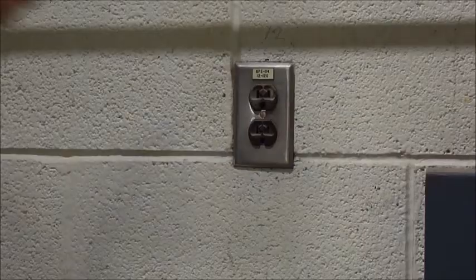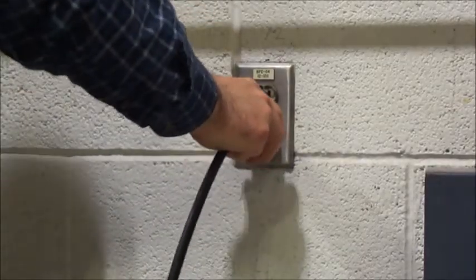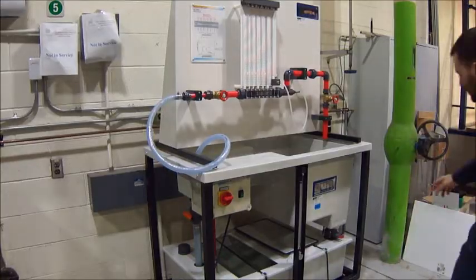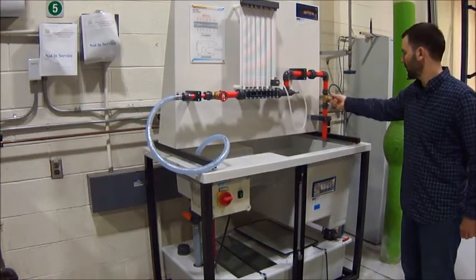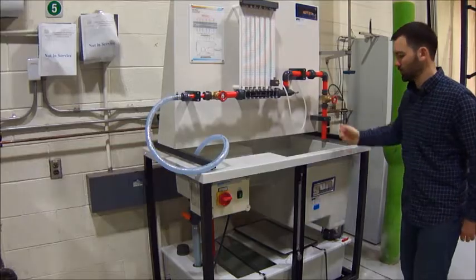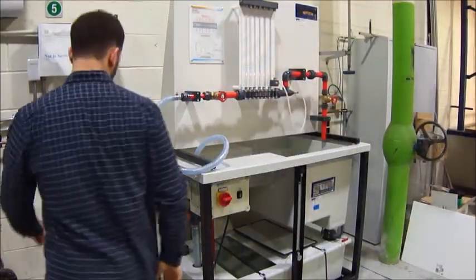Now the pump can be plugged into the power supply. Open the sliding valve between the measuring basin and the reservoir. Open the outlet valve, and open the gate valve.